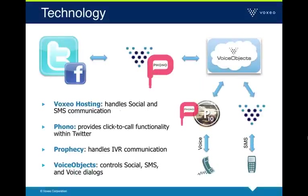The application scenario we've put together uses a variety of different Voxeo products. For example, there's a component in Voxeo Hosting that connects with Twitter and Facebook to listen to and watch the public Twitter timeline. Then we have Voice Objects, which is our application lifecycle suite for multi-channel communication applications — it manages and controls dialogues on the Twitter channel as well as those on the IVR or SMS channel. For IVR, we have Prophecy, which has the VXML browser that interprets VoiceXML to deliver the IVR experience. And then we have Phono, which is the browser plug-in that allows us to do click-to-call functionality out of Twitter.